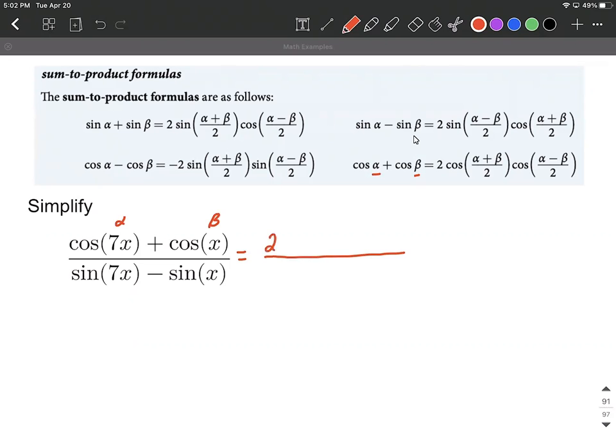So this will end up being 2 cosine of (7x plus x) all over 2, multiplied by cosine of (7x minus x) all over 2.